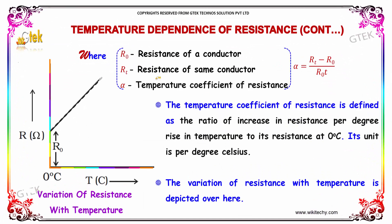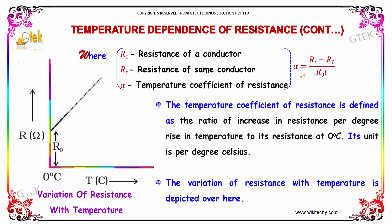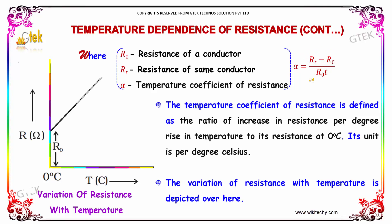R0 is the resistance of a conductor at 0 degree Celsius. Rt is the resistance at T degree Celsius. Alpha is the temperature coefficient of resistance, defined as the ratio of increase in resistance per degree rise in temperature to its resistance at 0 degree Celsius. Its unit is per degree Celsius.